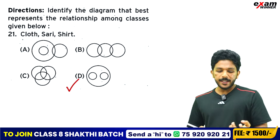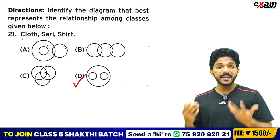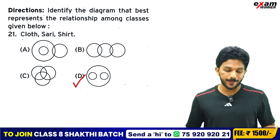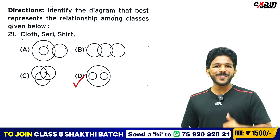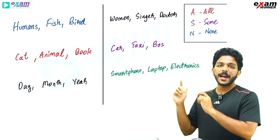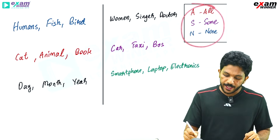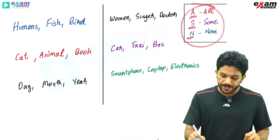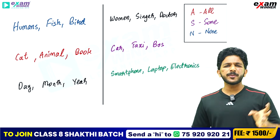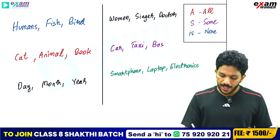I'll tell you — when you see a Venn diagram, think about it logically. I'll give you a trick code: ASN — All, Some, None. This is a big topic, but very simple. Let's try this trick.